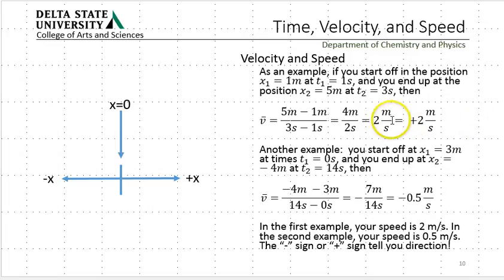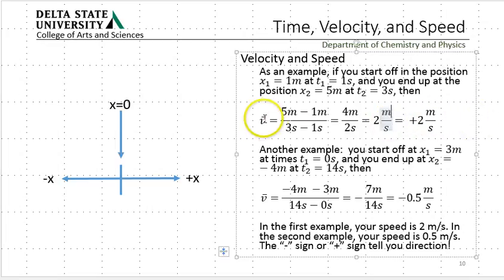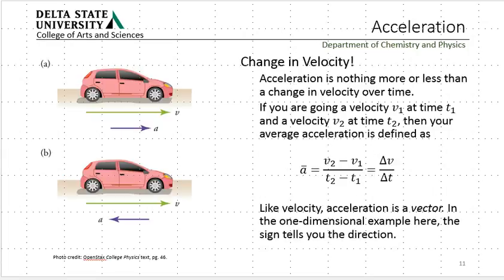If I really wanted to make this a vector for velocity, we need to add an x hat out here. Just as velocity is change in position over time, acceleration is change in velocity over time.